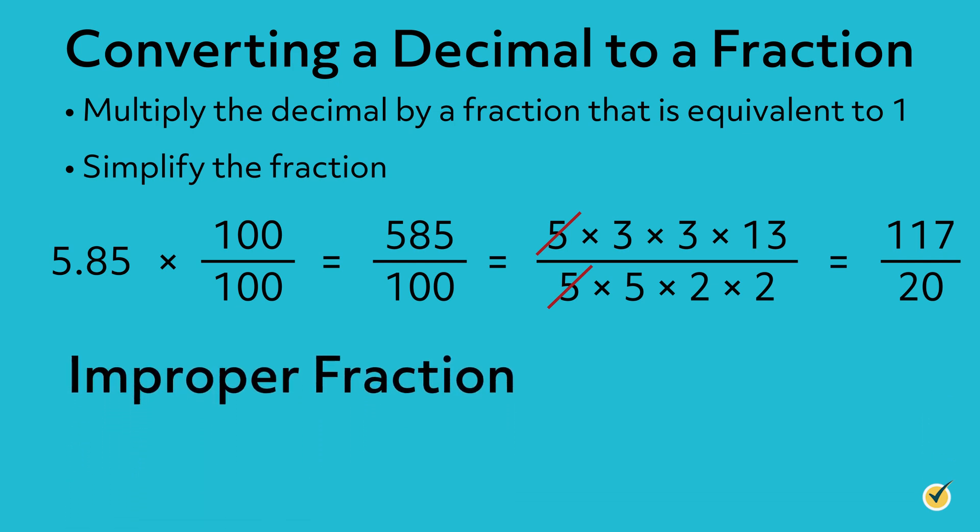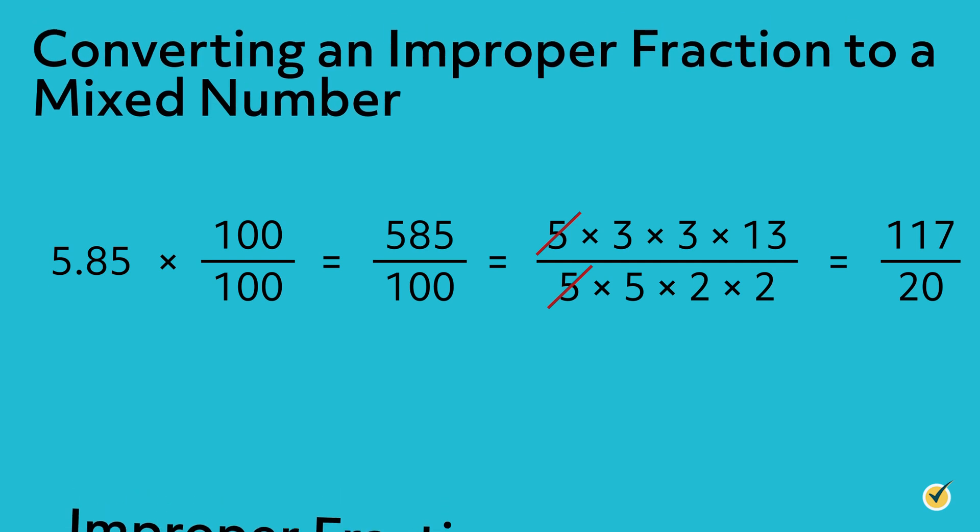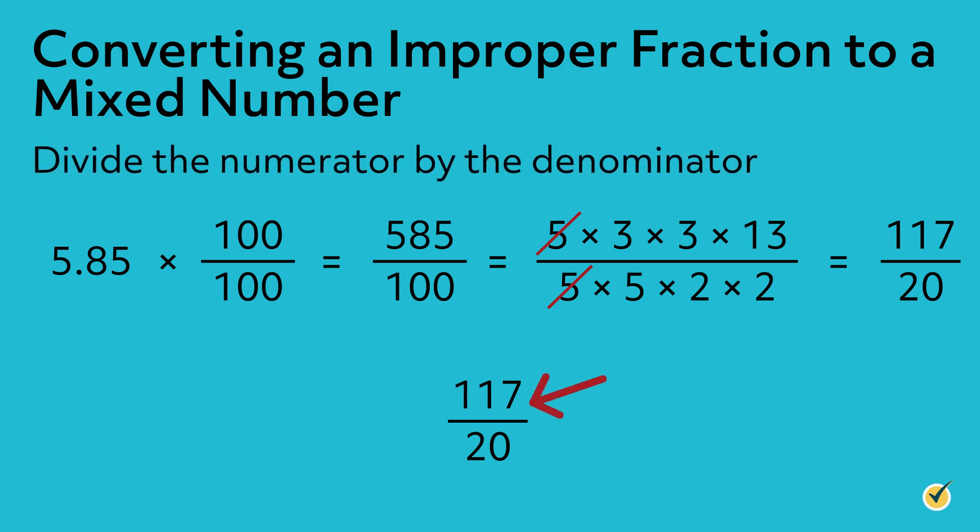which is also called an improper fraction. We will now convert the improper fraction into a mixed number. We will convert the improper fraction 117 over 20 to a mixed number by first dividing the numerator by the denominator.